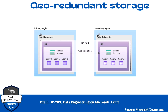Geo-Redundant Storage copies your data synchronously three times within a single physical location in the primary region using LRS. It then copies your data asynchronously to a single physical location in a secondary region that is hundreds of miles away from the primary region. GRS offers durability for Azure Storage data objects of at least 16 nines over a given year. A write operation is first committed to the primary location and replicated using LRS, then replicated asynchronously to the secondary region. When data arrives at the secondary location, it is also replicated within that location using LRS. In this diagram, you can see how your data is replicated.